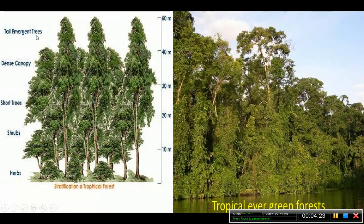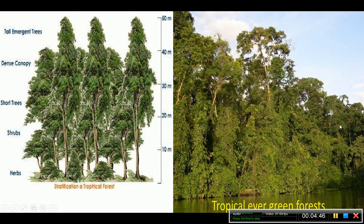Trees that reach up to 50 meters or more are categorized as tall emergent trees. Here you can see a picture of evergreen forest showing how dense these forests look.